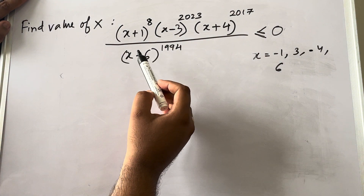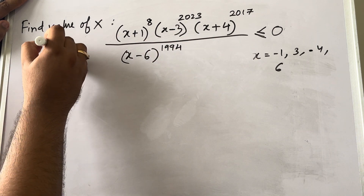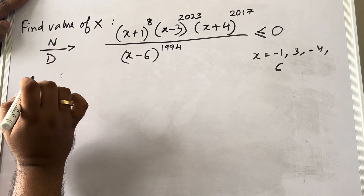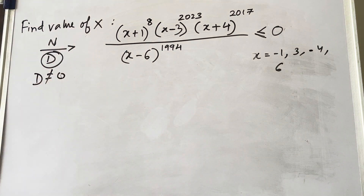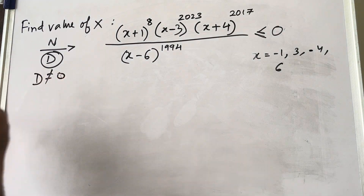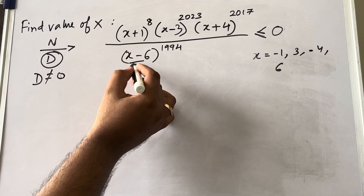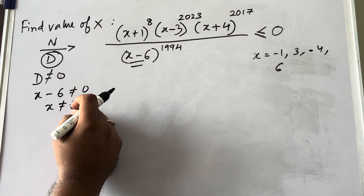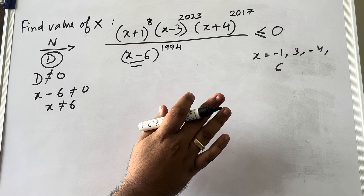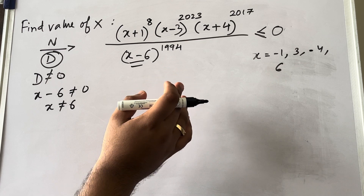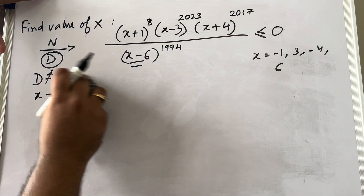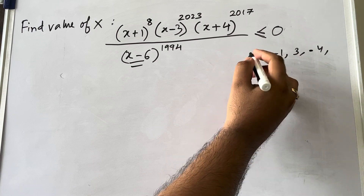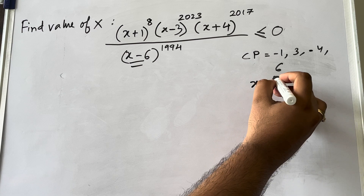These form the critical points for this inequality. Now there is a numerator part and a denominator part with an inequality sign. The denominator part can never be equal to zero — keep this in mind. So x − 6 can never be zero, meaning x can never equal 6. Although 6 is a critical point where the graph changes sign, x cannot take the value 6. I'll note the critical points and write that x is not equal to 6.